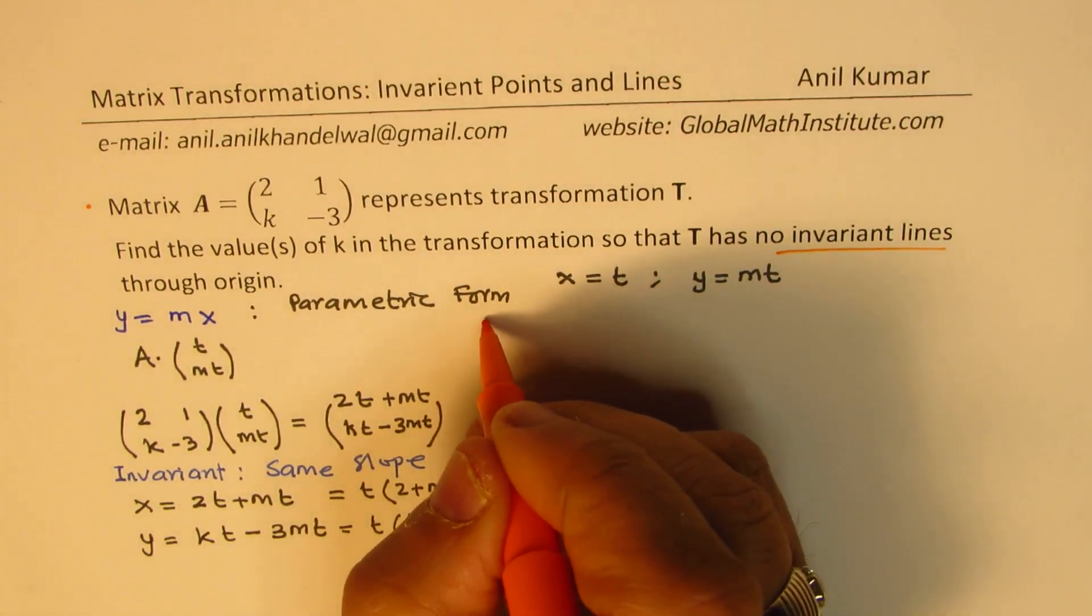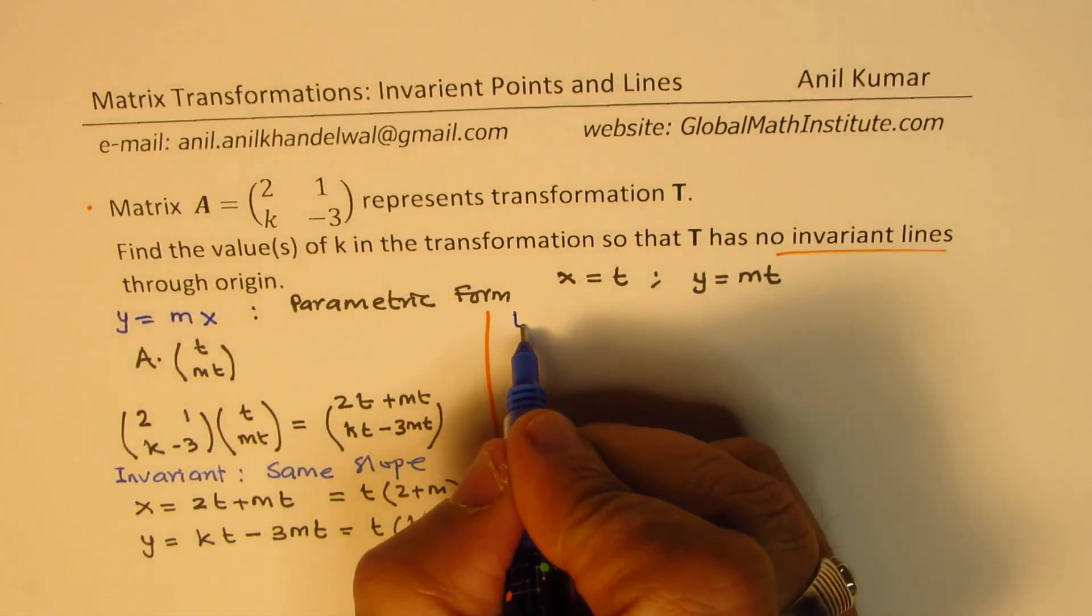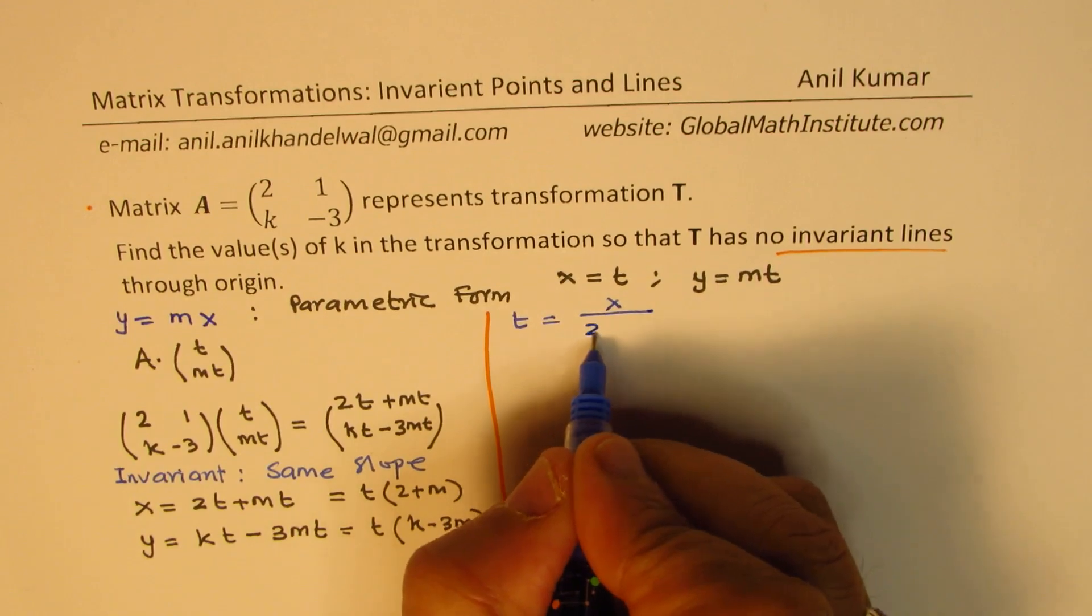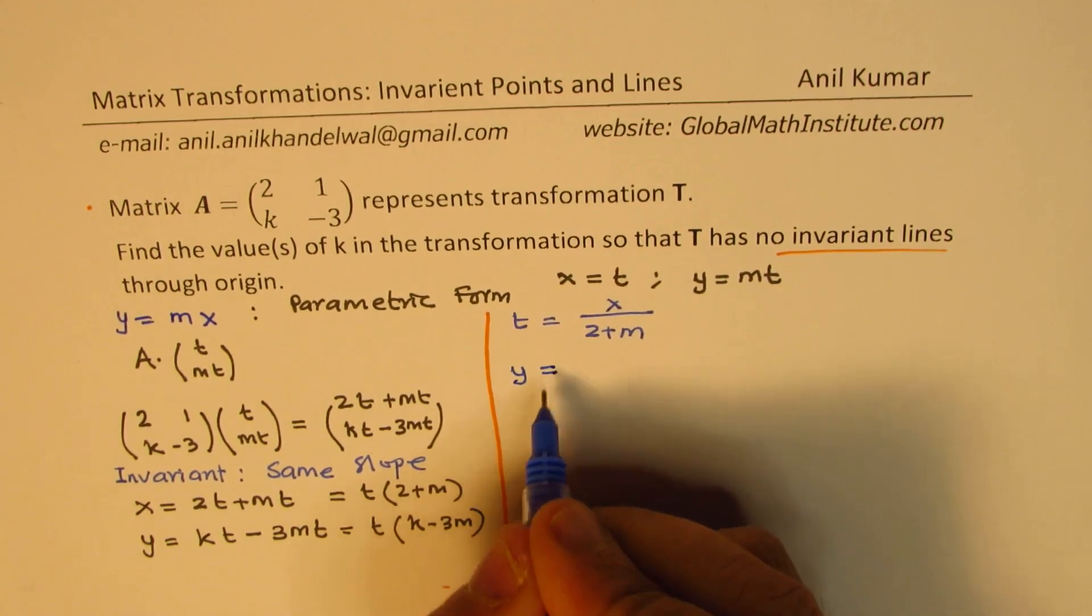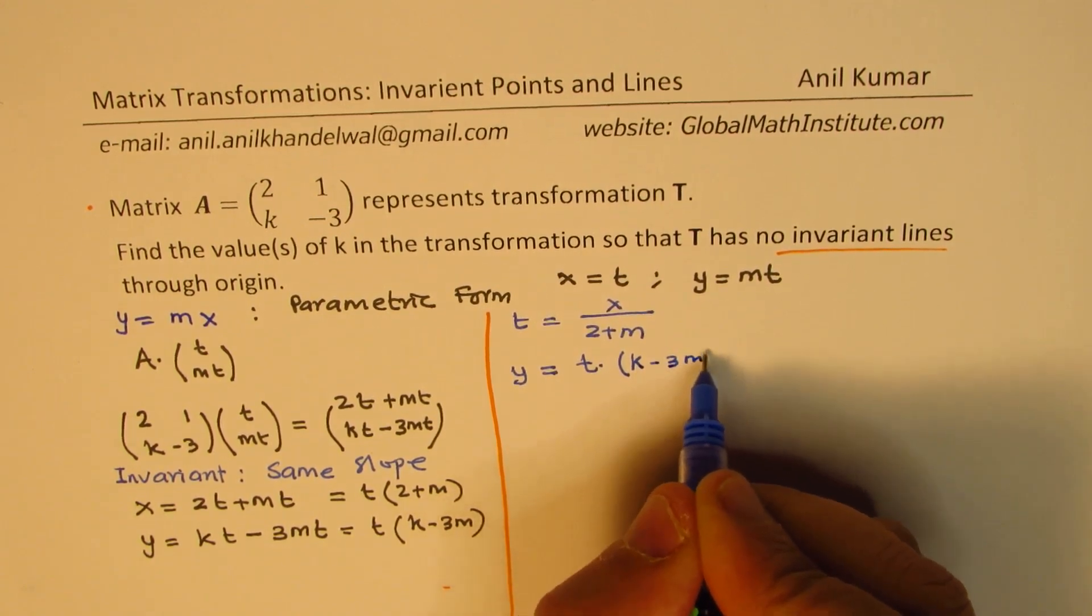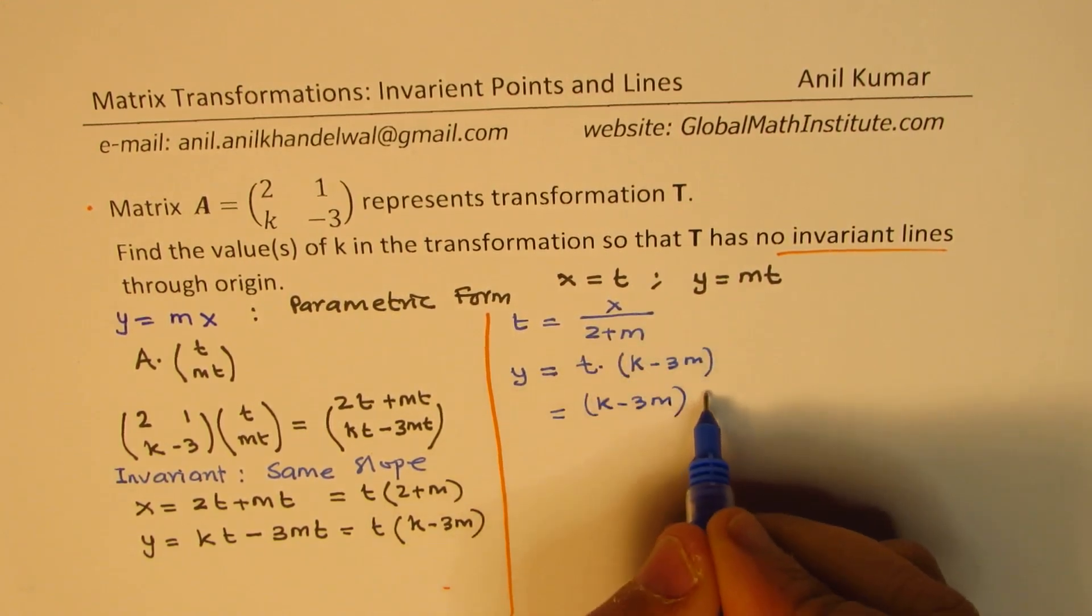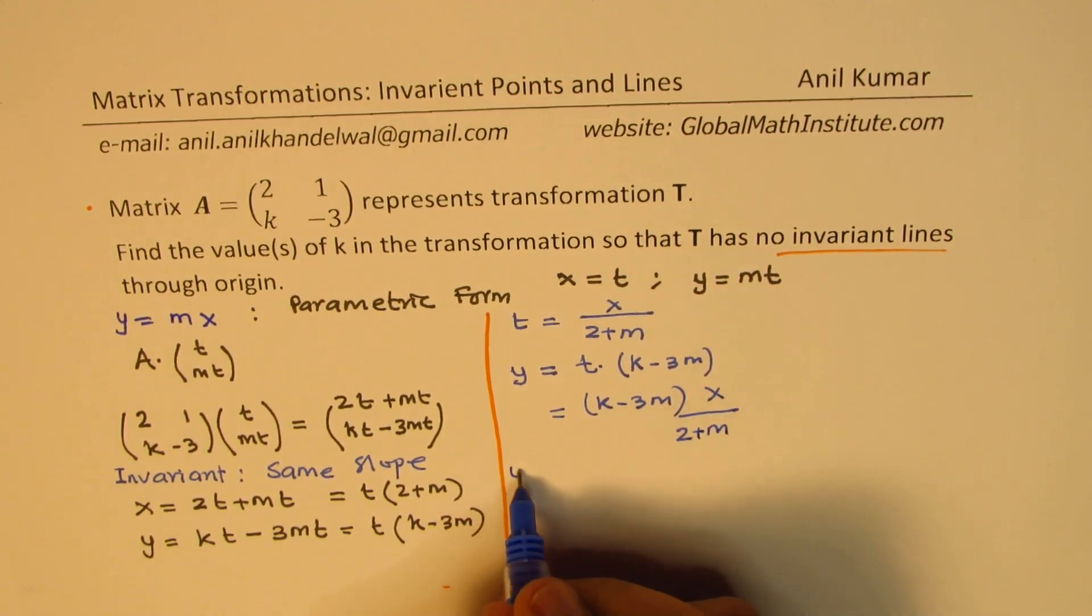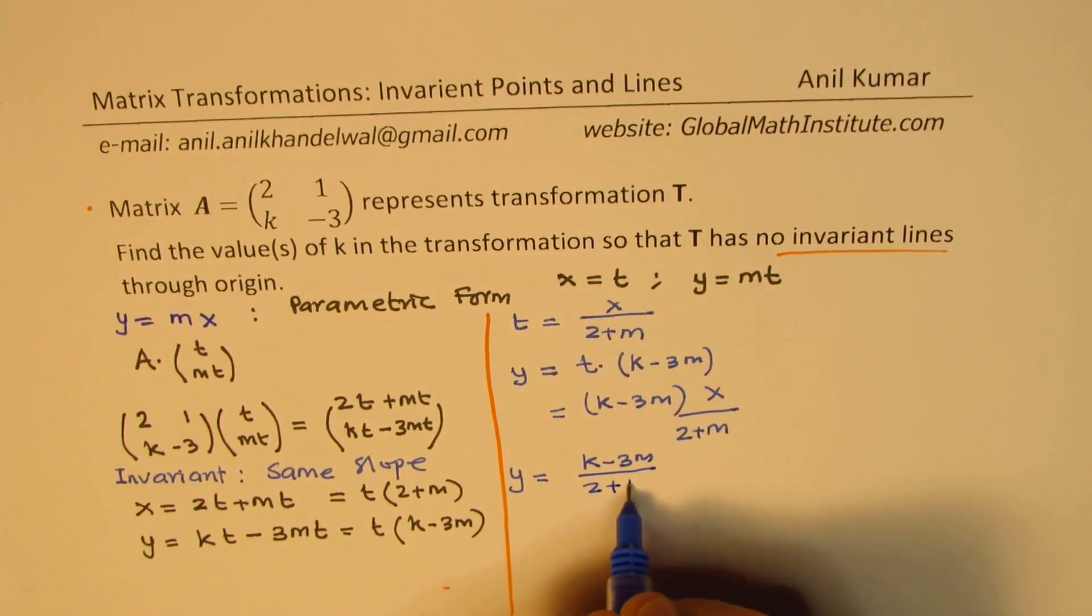So combining these two equations, we get equation of the line. So we can write t equals x over 2 plus m, and we have y equals t times k minus 3m. So t is this. So we can write this as k minus 3m first, and t is x over 2 plus m. So from here, we get y equals k minus 3m over 2 plus m times x.